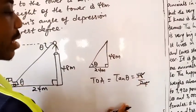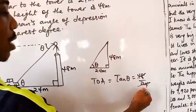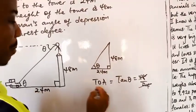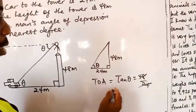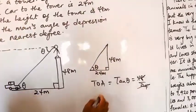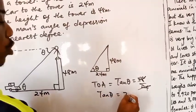If we divide this now, 48 divided by 24 gives us 2. So tan theta would be equal to 2.